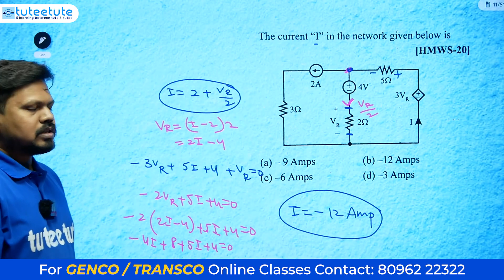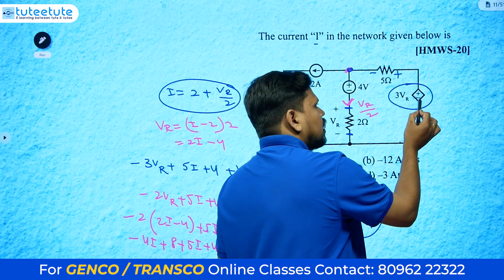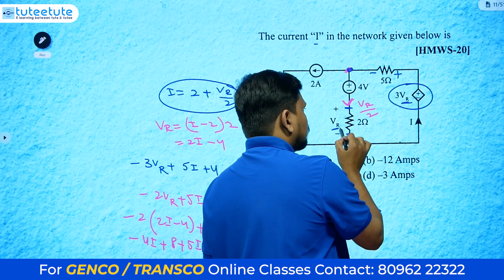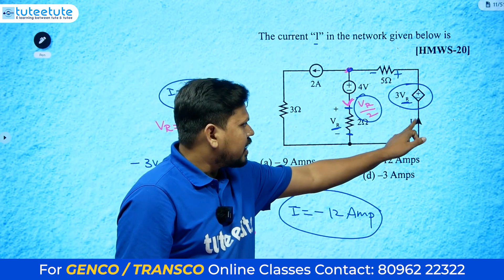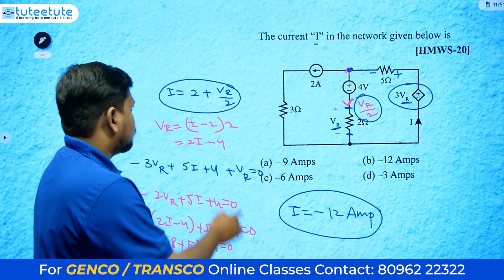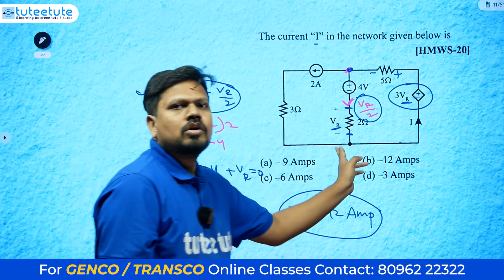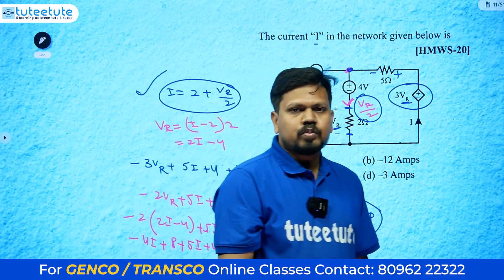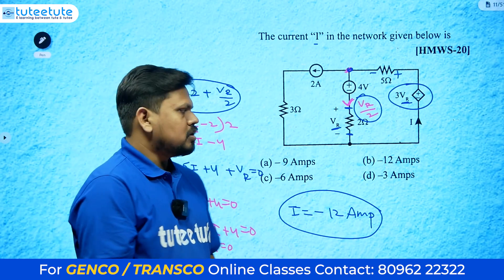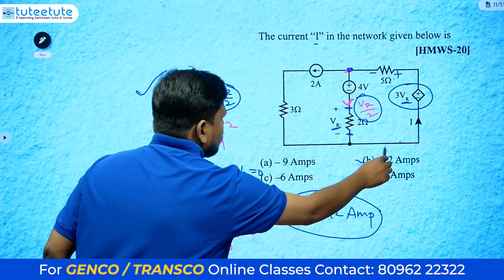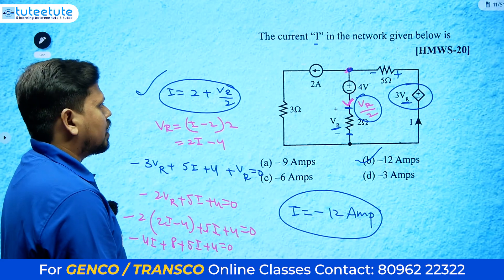The key idea: whenever a dependent source is present, go directly to the dependent source and find the relation between the dependent value and its controlling variable. Then apply nodal, mesh, or superposition — any one method. The answer for current i is minus 12 amperes.